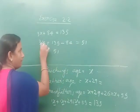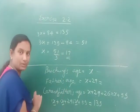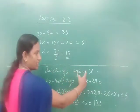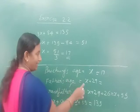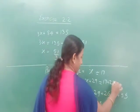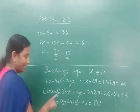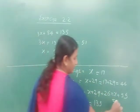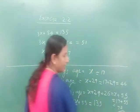So x = 51 ÷ 3 = 17. Baiju's age is 17. Father's age is x + 29 = 17 + 29 = 46. Grandfather's age is x + 55 = 17 + 55 = 72 years old.